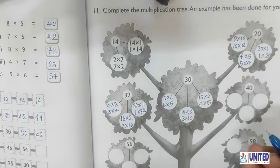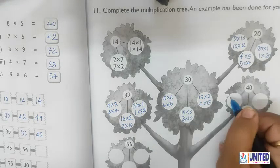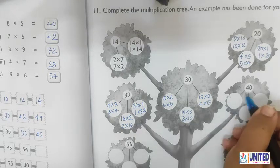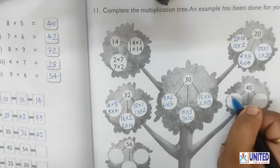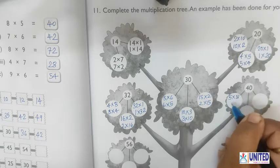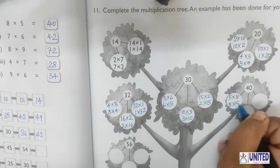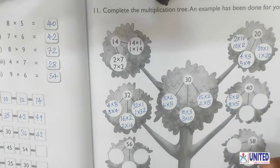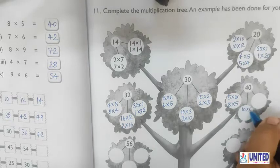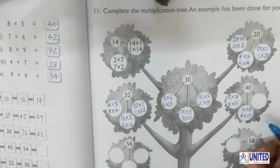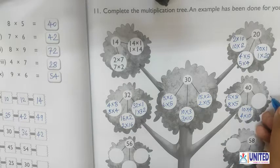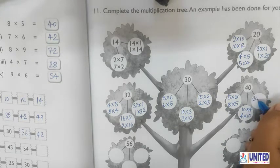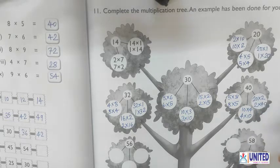For the number 40: 5×8=40, 8×5=40. Also 10×4=40 or 4×10=40. And we can also write 2×20=40 or 20×2=40.